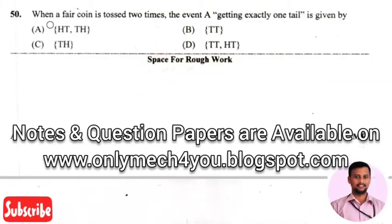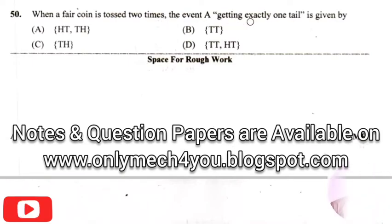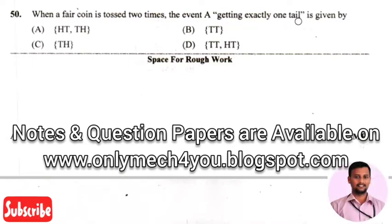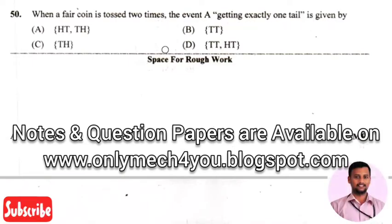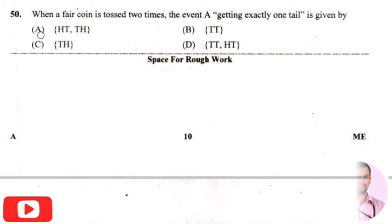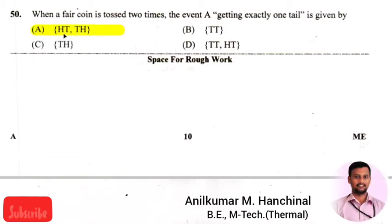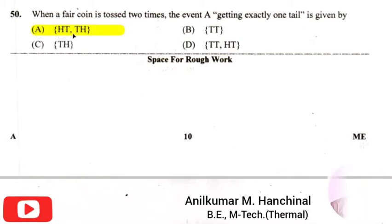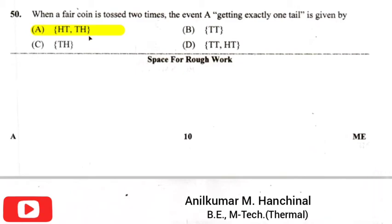The next question is: when a fair coin is tossed two times, the event A of getting exactly one tail is given by — the right answer is option one, that is {HT, TH}, that is head-tail and tail-head.